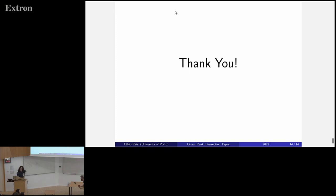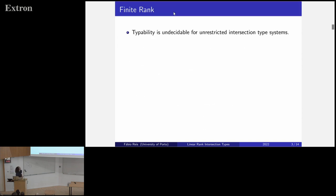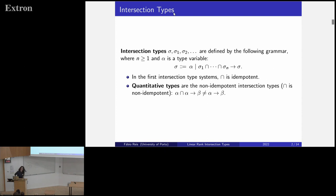Question: Is it correct that n is strictly greater than zero — is that not a typo? Answer: No, it is not a typo. Question: Then how can you deal with an argument you would like to discard? Answer: We don't type those terms — our system is for the lambda-I calculus, which doesn't allow discarding arguments. That wasn't made clear, but yes, we work in lambda-I.